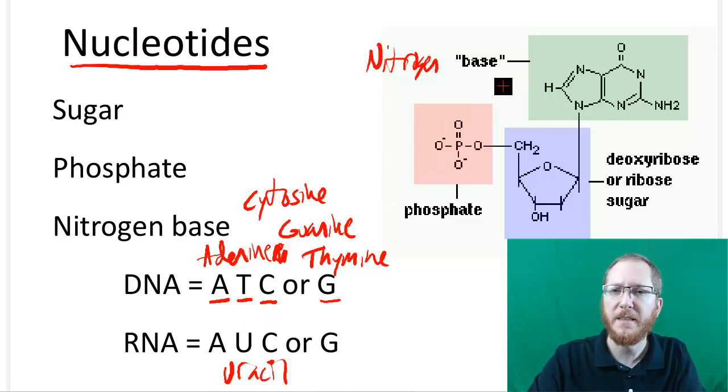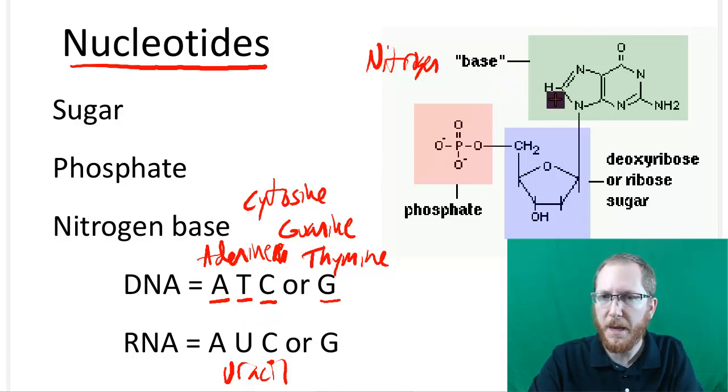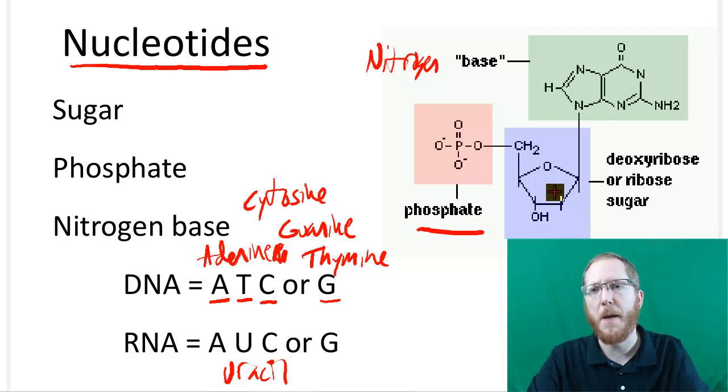The other parts of a nucleotide - beyond the nitrogen base, each nucleotide will have a phosphate group, that's just a P with some O's around it. And it's going to have a pentose sugar. It's called that because it typically has five carbons that make it up.